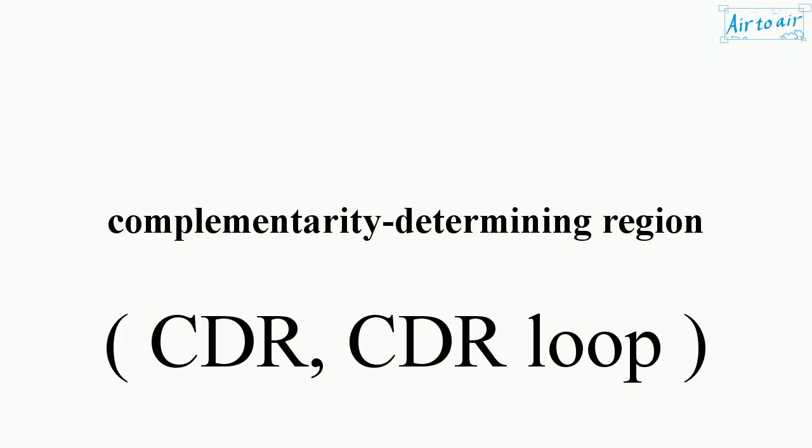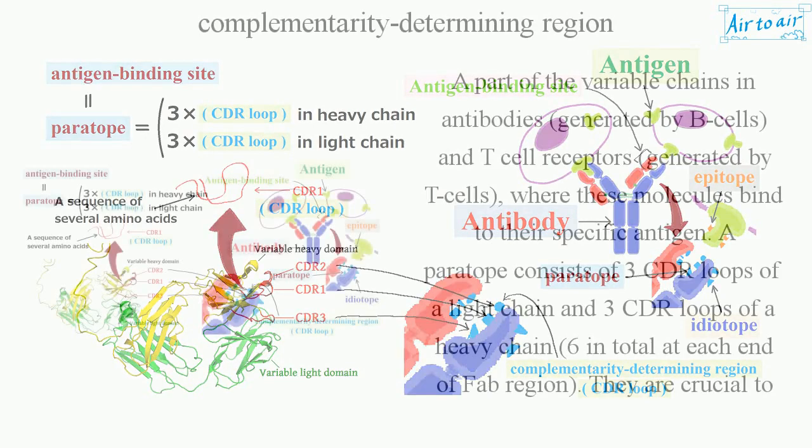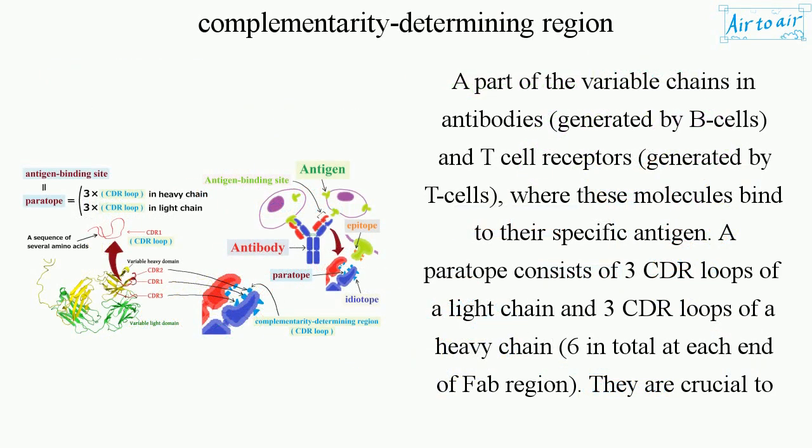Complementarity Determining Region: a part of the variable chains in antibodies generated by B cells and T cell receptors generated by T cells, where these molecules bind to their specific antigen.